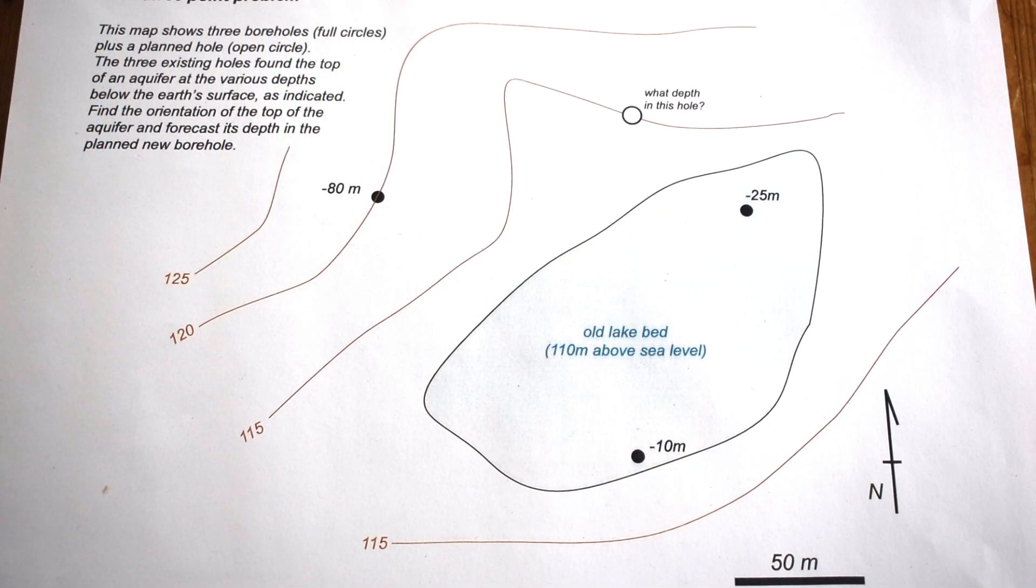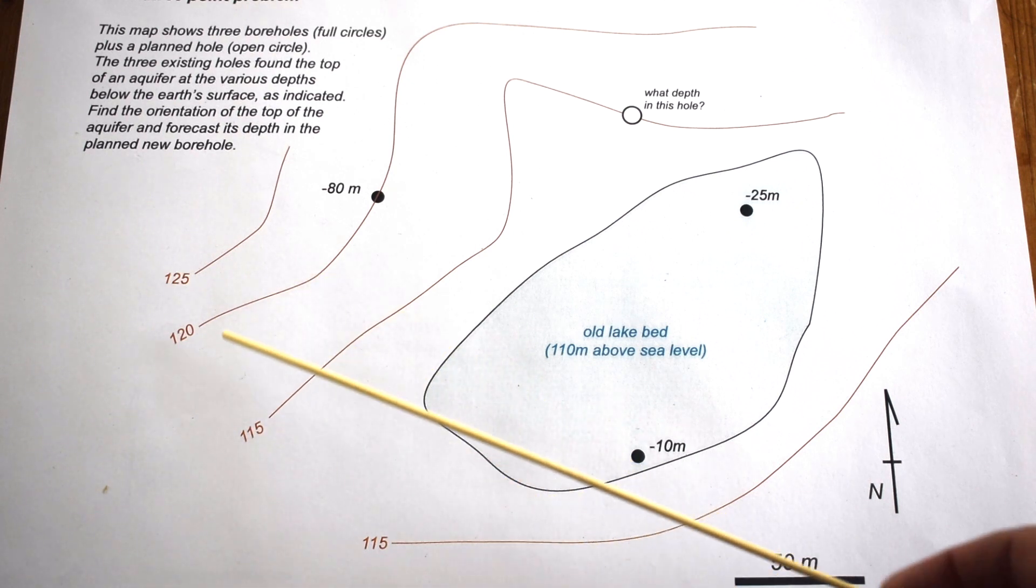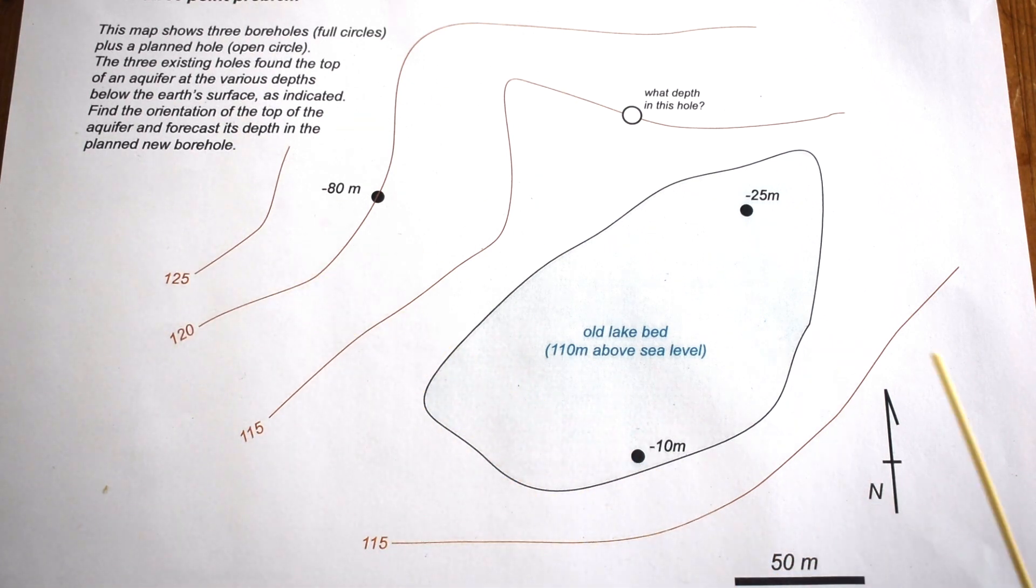Let's look at the map. We can see that we've got a scale here in meters horizontally and a north arrow. The topography is shown by these brown contour lines which are separated by intervals of five meters. There's also an old lake bed which has got this elevation of 110 meters above sea level.